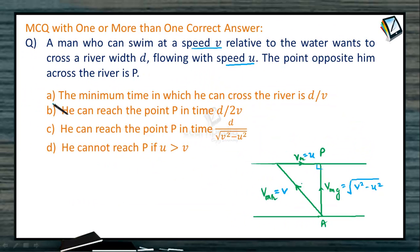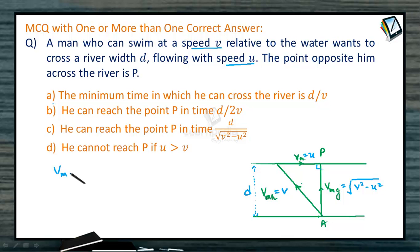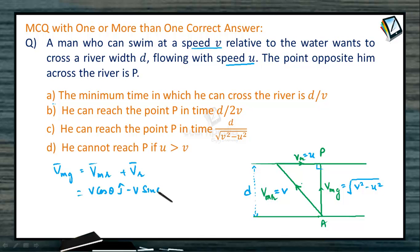Let us look into the first point — the minimum time in which he can cross. The width of the river is D, so the time taken will be D divided by the velocity along the crossing direction. The velocity of the man with respect to ground equals the velocity of the man with respect to river plus the velocity of the river.